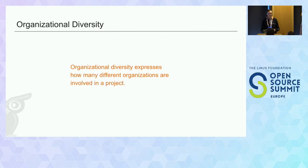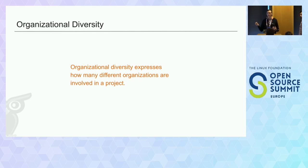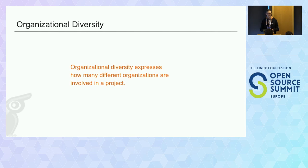Another example is looking at organizational diversity — how many companies are involved in an open source project. Because even if there are many contributors, if they're all employed by the same company and that company pulls support, the project might just go away. So the strategic goal of some communities is to have many different organizations working together so that it's not dependent on just one.